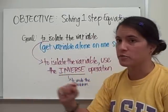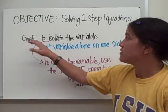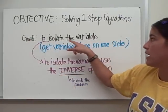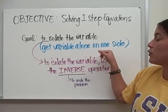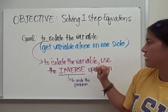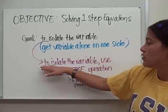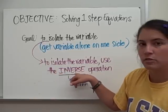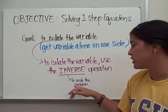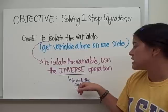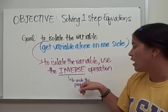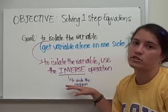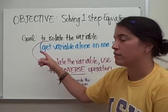A one-step equation only has one step. The goal is to isolate the variable, and isolate means get the variable alone on one side of the equal sign. In order to isolate the variable, we need to use the inverse operation. The inverse operation is how we undo the equation to isolate the variable.